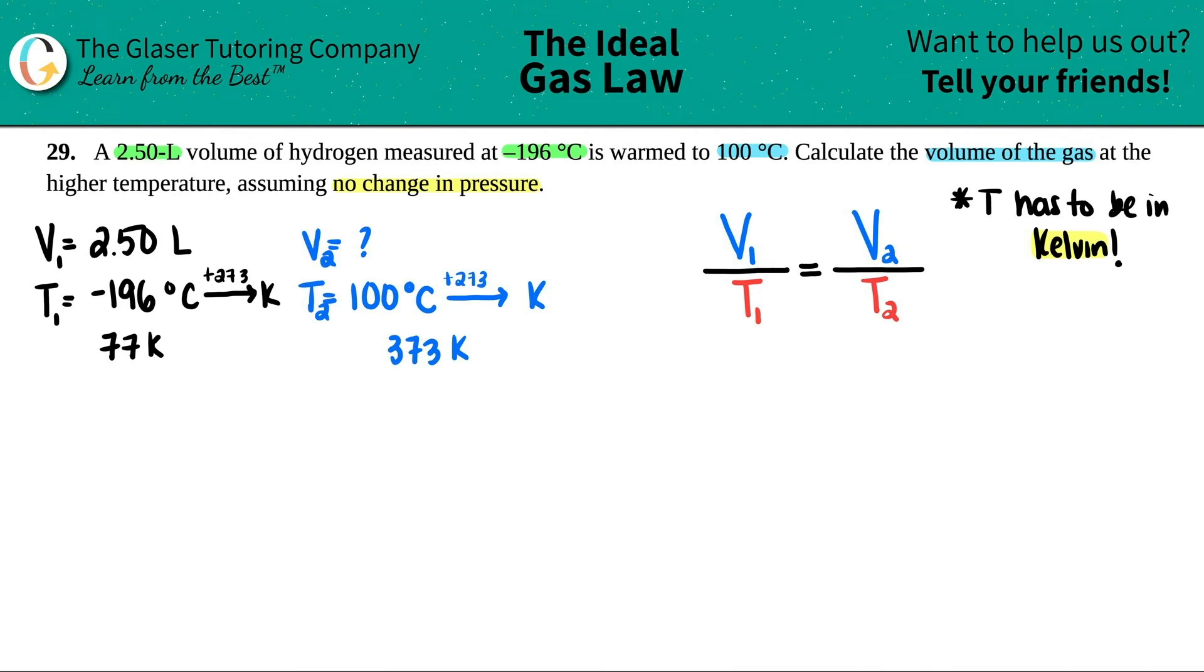So now let's just plug them in, right? So V1 and T1, V2 and T2. So let's go for it. So I got 2.50 divided by 77, and this all equals my V2, which we're trying to figure out. So I'm just going to say X, and then it's over 373. When I do the actual work in my formula, I don't like to write any units. I always like to just double check just to make sure I have the right units, and then I just plug in the numbers.